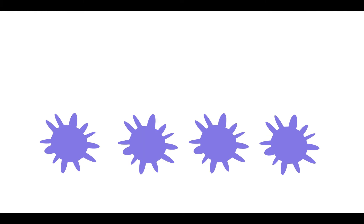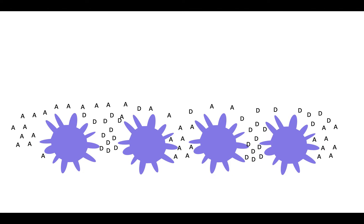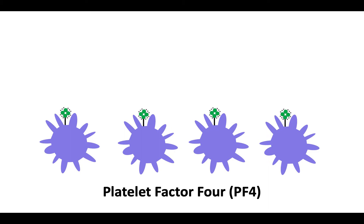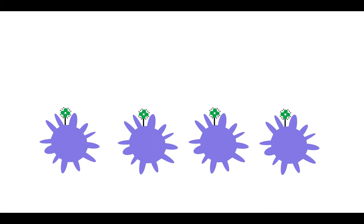The story of HIT begins with platelets. When platelets become activated, they secrete proteins from dense and alpha granules. Alpha granules secrete a protein known as platelet factor 4, or PF4. PF4 forms a tetramer that binds to and neutralizes proteoglycan molecules such as endogenous heparan sulfate. PF4 also recognizes and binds heparin.